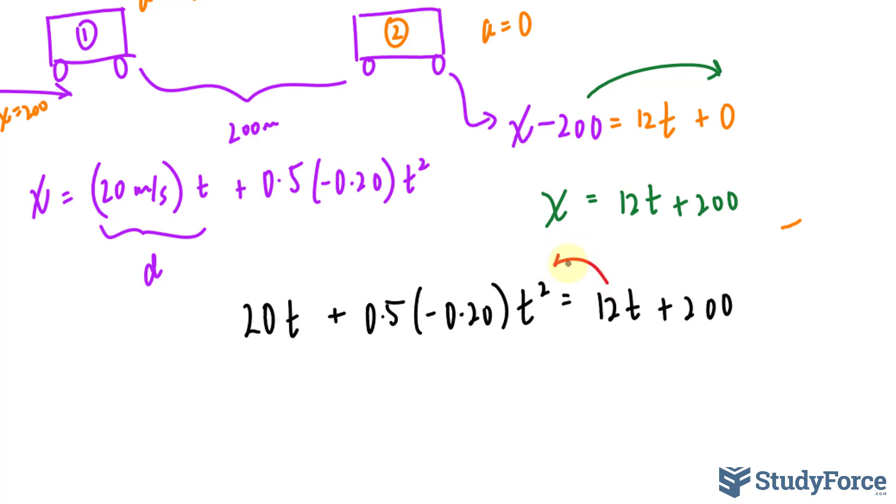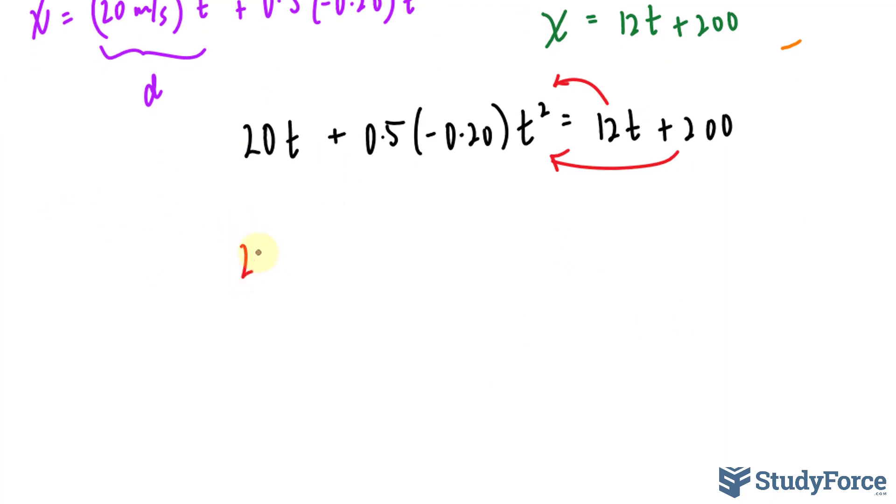I'll bring all the terms to one side. It doesn't matter which side you choose. We have 20t. Multiplying 0.5 times negative 0.2 makes negative 0.10 t squared minus 12t. These two terms are alike. We'll combine them soon. Bringing this term over makes it negative 200 and that's equal to 0. Let me simplify this equation a little further. I'll write down negative 0.10 t squared. Combining these two, I get positive 8t minus 200 is equal to 0.